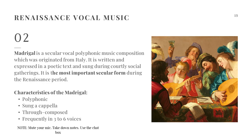Another type of renaissance vocal music is what we call the madrigal. This is a secular vocal polyphonic music composition which originated from Italy. It is written and expressed in poetic text and sung during courtly social gatherings. It is the most important secular form during the renaissance period. The characteristics of the madrigal include: polyphonic — two or more melodies sounding together; sung in acapella; through-composed; and frequently in three to six voices.